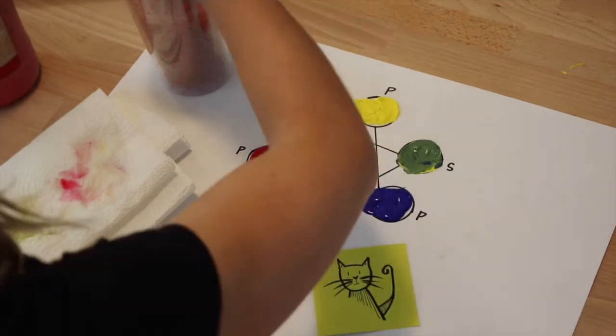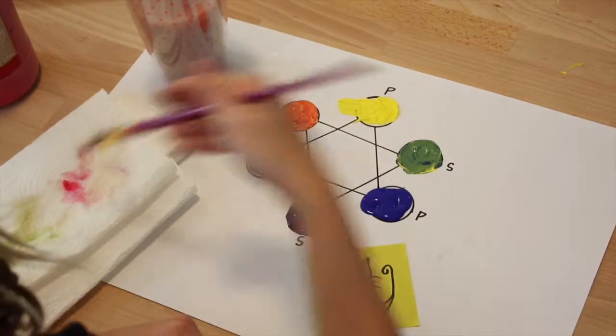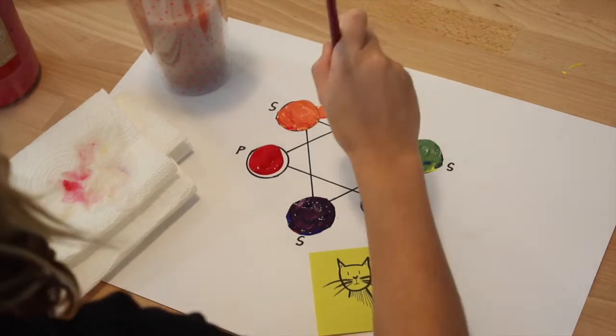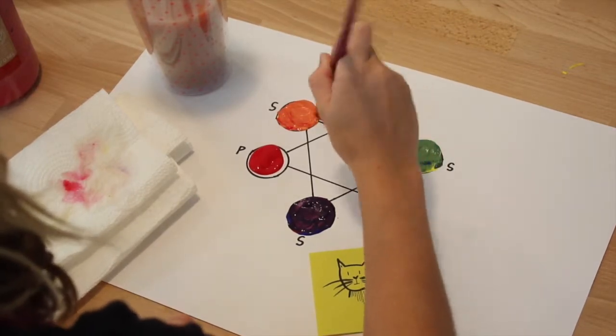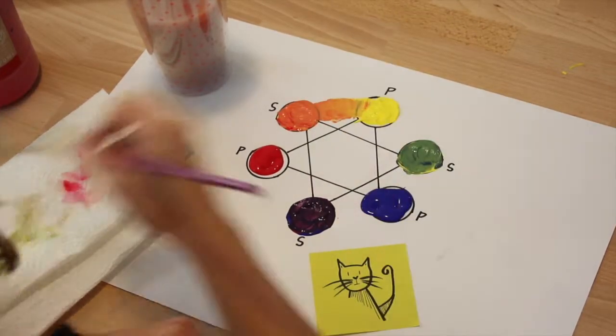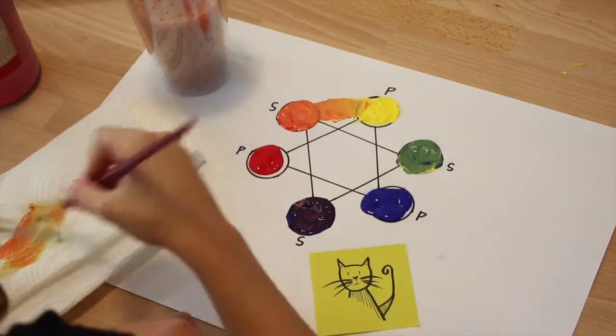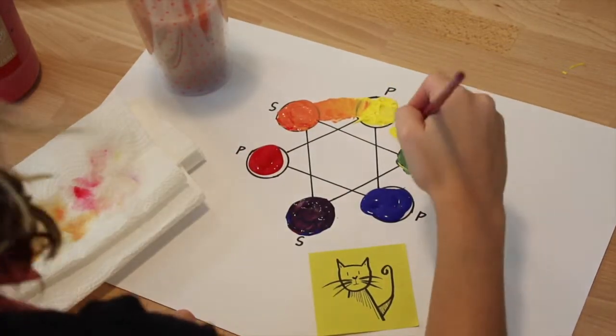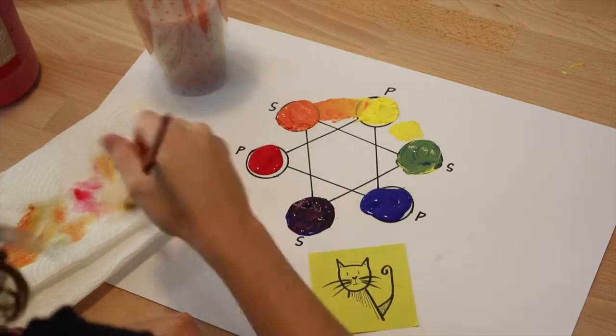When we mix our primary and secondary colors, we get tertiary colors. First, I will get yellow orange. When I mix yellow and orange, then when I mix yellow and green, I will get yellow green.